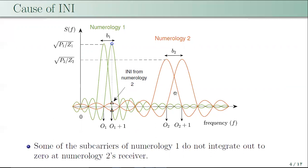At the numerology 2 receiver as well, the subcarriers of numerology 1 cause inter-numerology interference. The subcarriers which do not have an integer number of cycles within the duration of numerology 2's OFDM symbol duration cause this interference. In this work, we analyze inter-numerology interference in time-varying multipath channels.